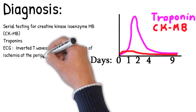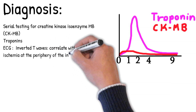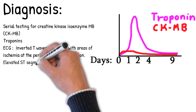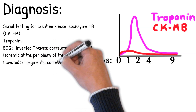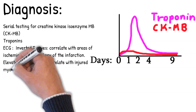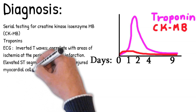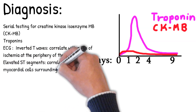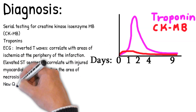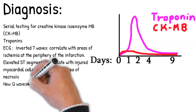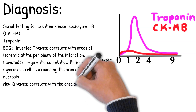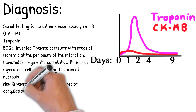ECG changes with pathologic correlation: inverted T waves correlate with areas of ischemia at the periphery of the infarction; elevated ST segments correlate with injured myocardial cells surrounding the area of necrosis; and new Q waves correlate with the area of coagulation necrosis. Additional diagnosis includes symptoms relating to ischemia, changes in heart wall motion on imaging, and demonstration of a thrombus on angiogram or at autopsy.